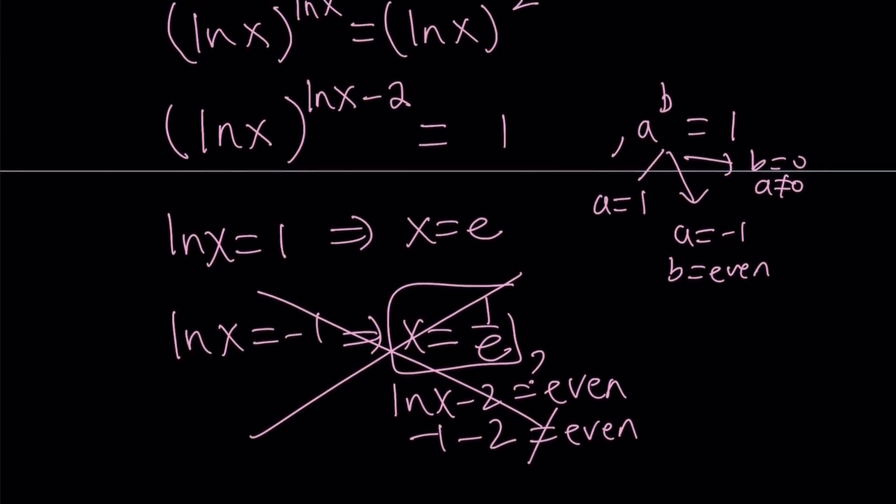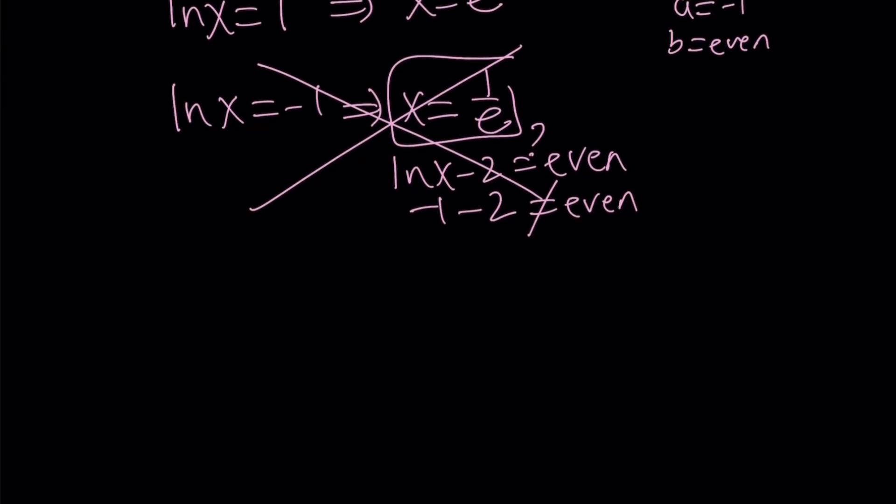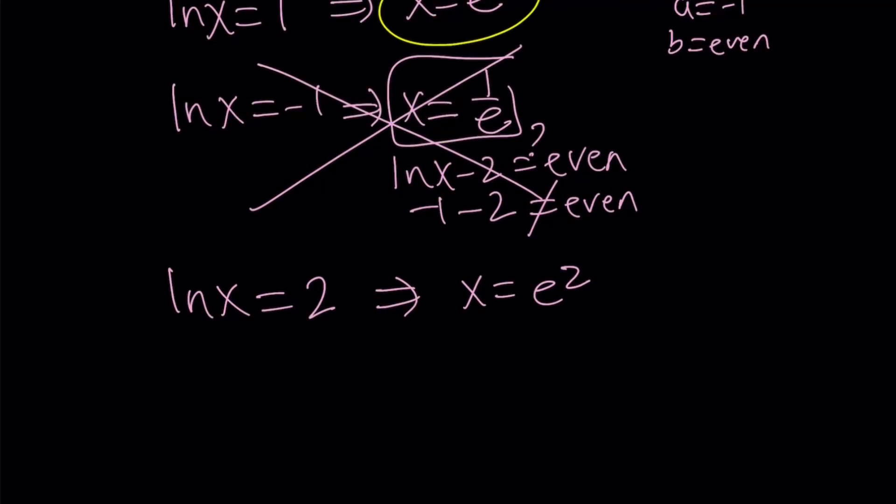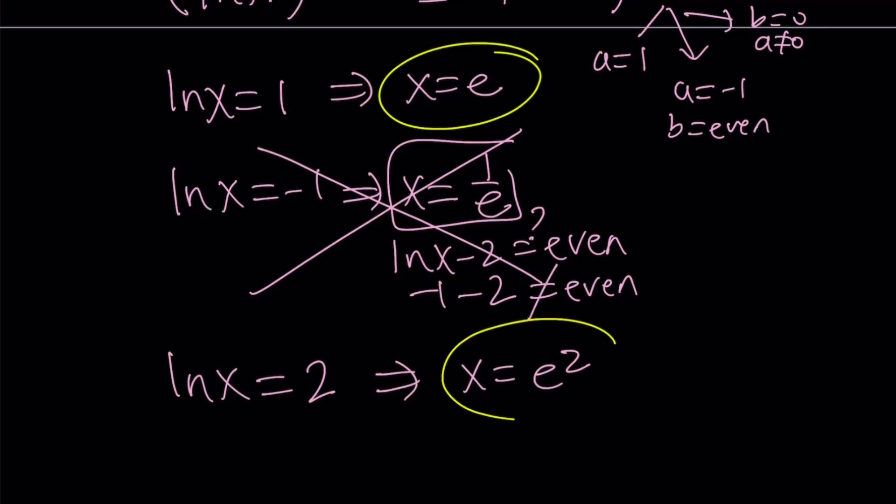b equals zero. So that is ln x minus two is equal to zero, which means ln x is equal to two. This implies x equals e squared. So those are the cases. And basically, we get two solutions from here: x equals e and x equals e squared.